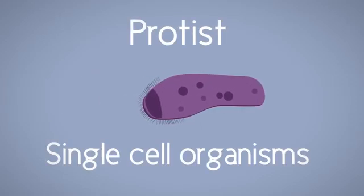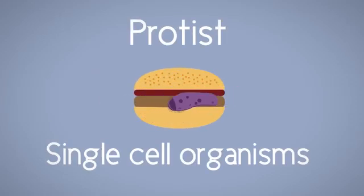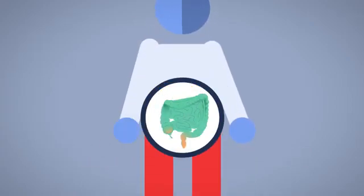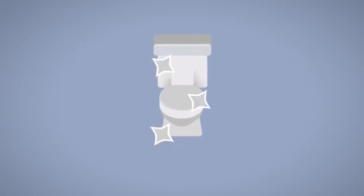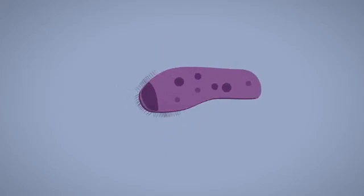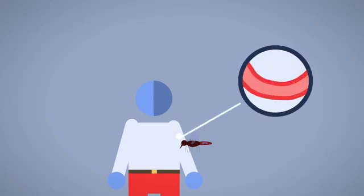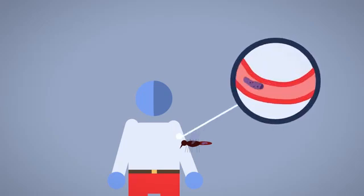Protists are single cell organisms. Some protists can contaminate food and cause amoebic dysentery which is an intestine infection and results in severe diarrhea. Protist pathogens can also be parasitic. They live in or on other organisms and cause harm. Malaria is an example of a protist pathogen that lives in the blood and is transmitted by mosquitoes.